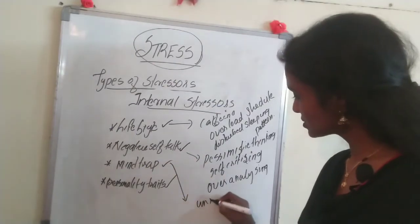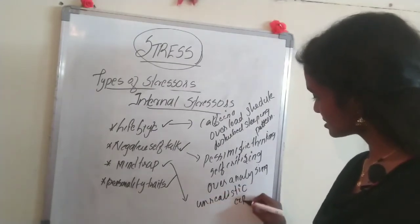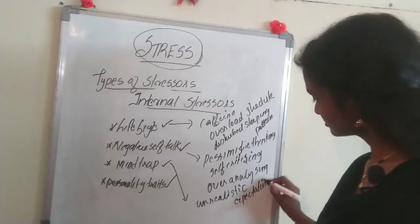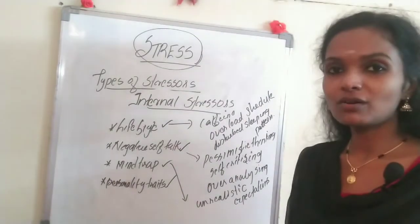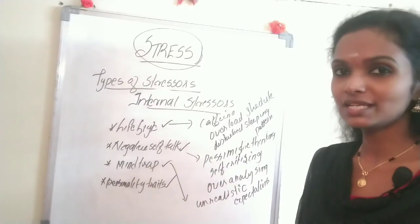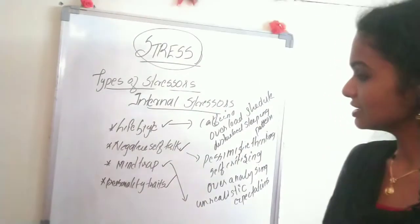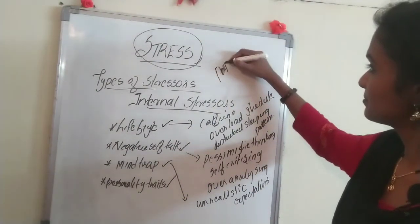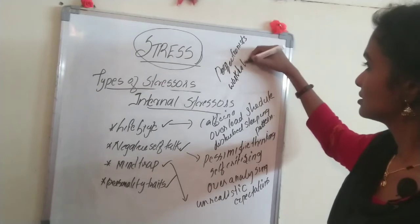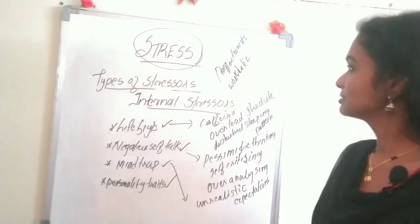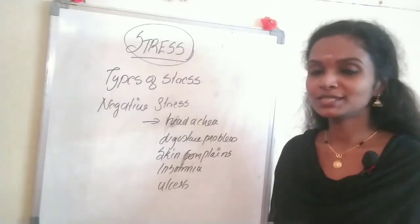An example of a mind trap is unrealistic expectations. Expectations can be good sometimes, but unrealistic expectations may cause stress because they will not be fulfilled, leading to stress. For personality traits, examples include being a perfectionist and a workaholic. A person always trying to be perfect in everything also causes stress.